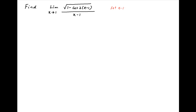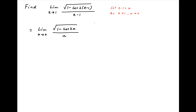Let's start by putting x minus 1 equal to u, therefore as x tends to 1, u tends to 0. Therefore the given limit is equal to limit u tending to 0 of square root of 1 minus cos 2u divided by u. This can be written as limit u tending to 0 of root 2 times sine squared u divided by u, which is equal to limit as u tends to 0 of root 2 times modulus of sine u divided by u.